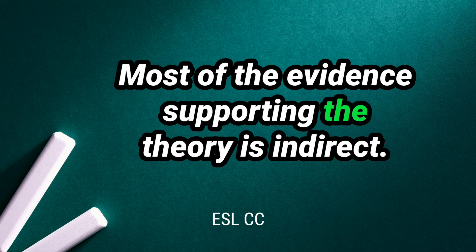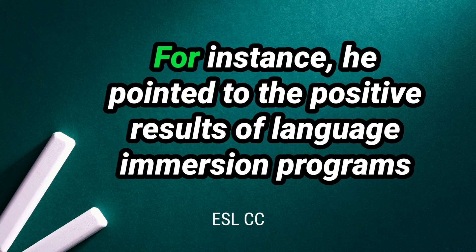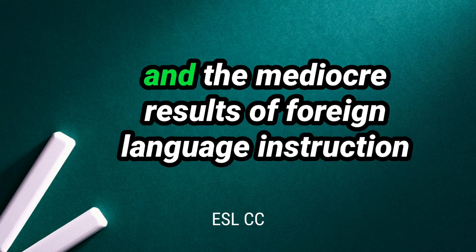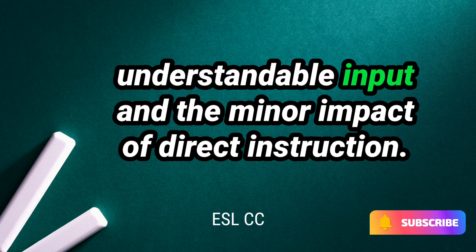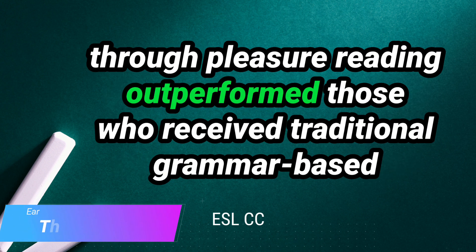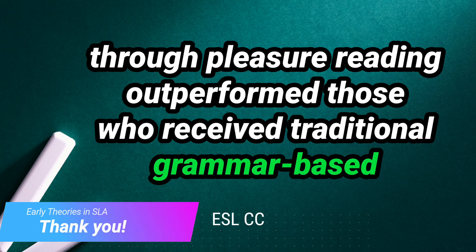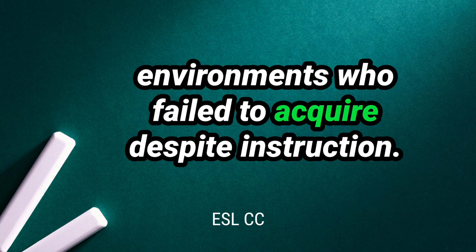Krashen believes that the affective filter can clarify the inconsistent outcome of SLA among L2 learners, involving differences in age and classroom conditions. Most of the evidence supporting the theory is indirect. Krashen mainly relies on general evidence to support his theory. For instance, he pointed to the positive results of language immersion programs and the mediocre results of foreign language instruction in the United States as evidence of the crucial role of comprehensible input and the minor impact of direct instruction. He cited studies in which students who received massive amounts of comprehensible input through pleasure reading outperformed those who received traditional grammar-based instruction, as well as individual learners in acquisition-poor environments who failed to acquire despite instruction.